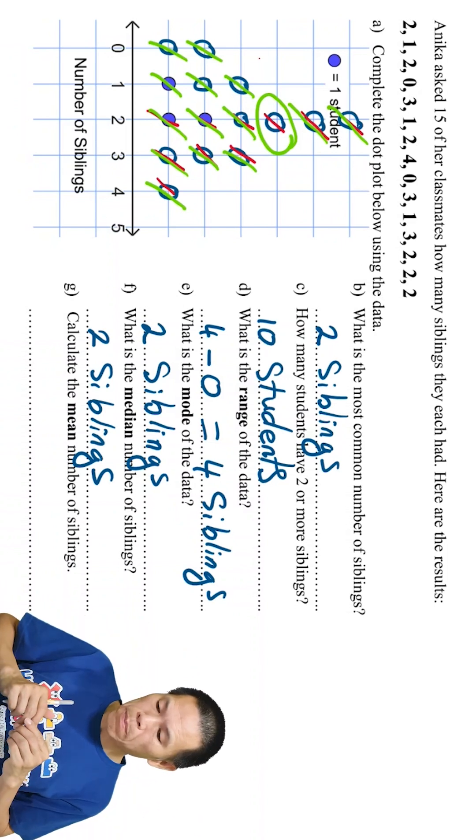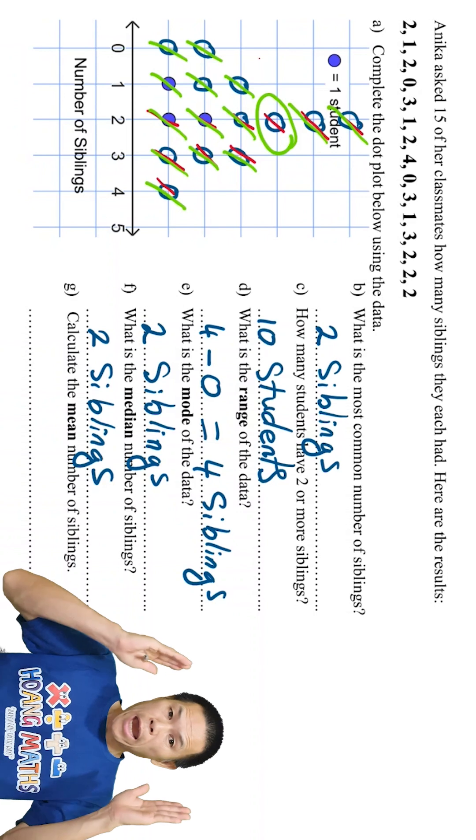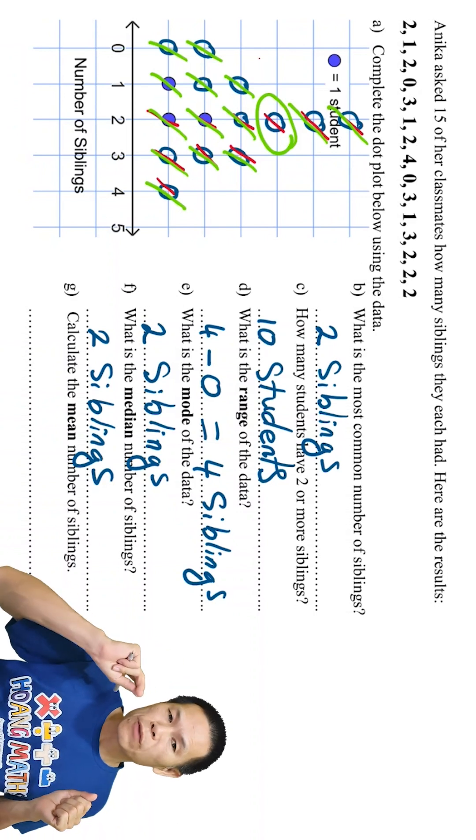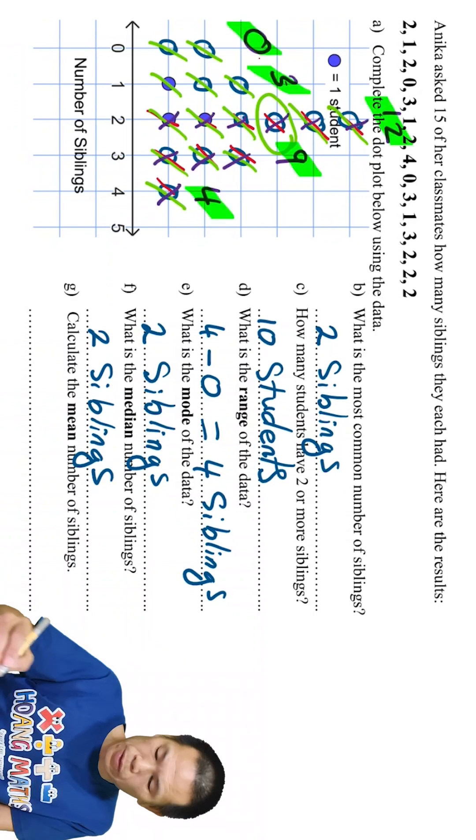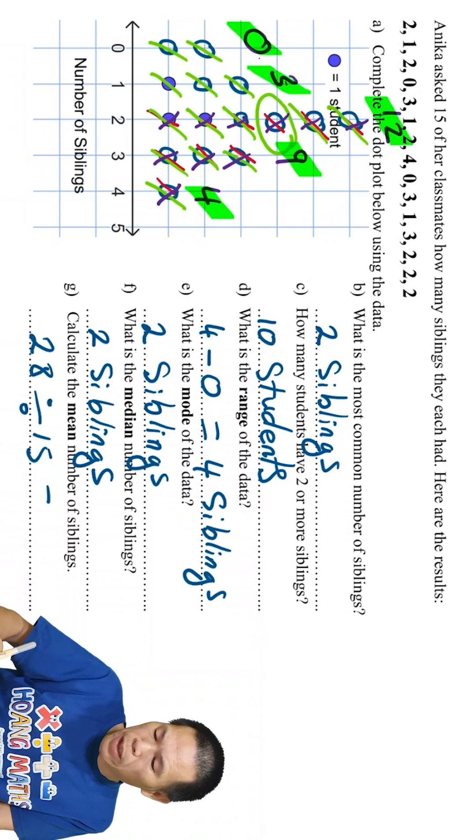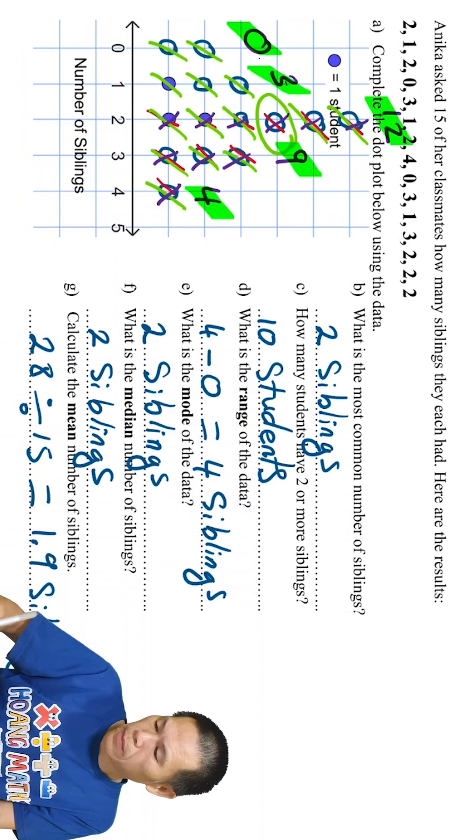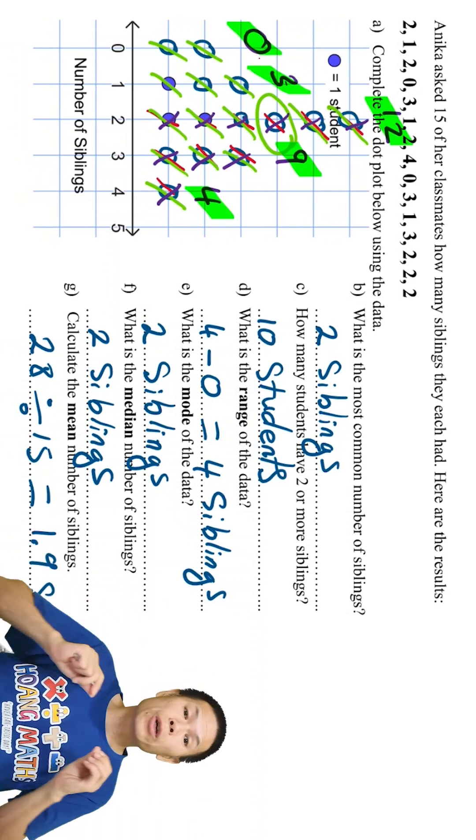Part G: calculate the mean number of siblings. So mean means we add all the score together, we divide by number of scores. So we have 28, we divide by 15, that will give me 1.9. There you go.